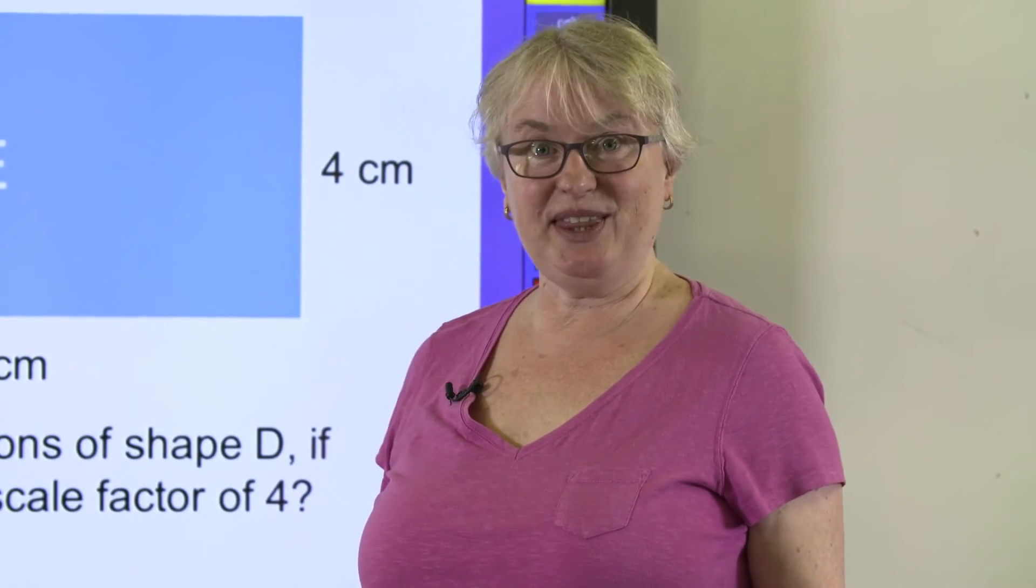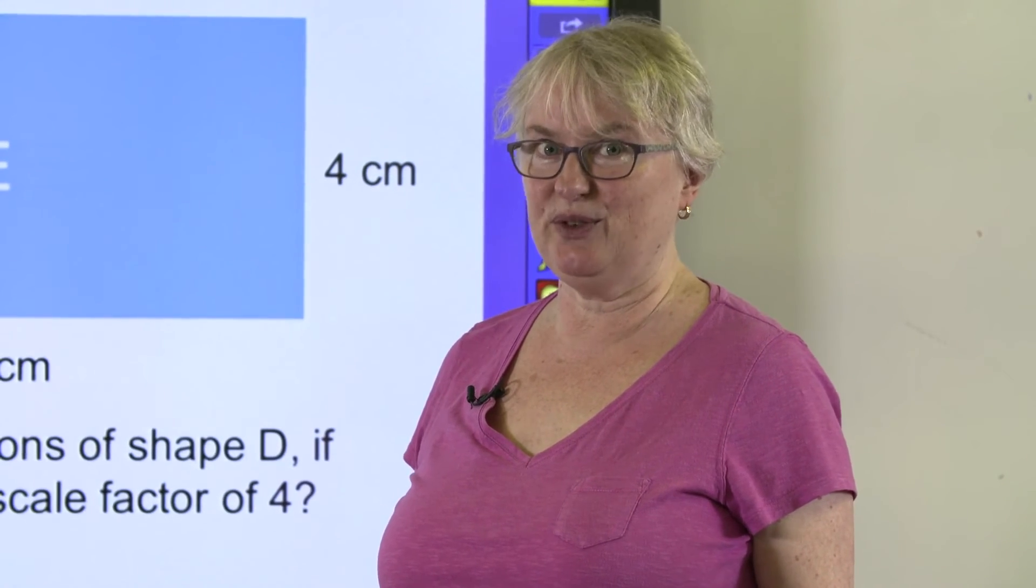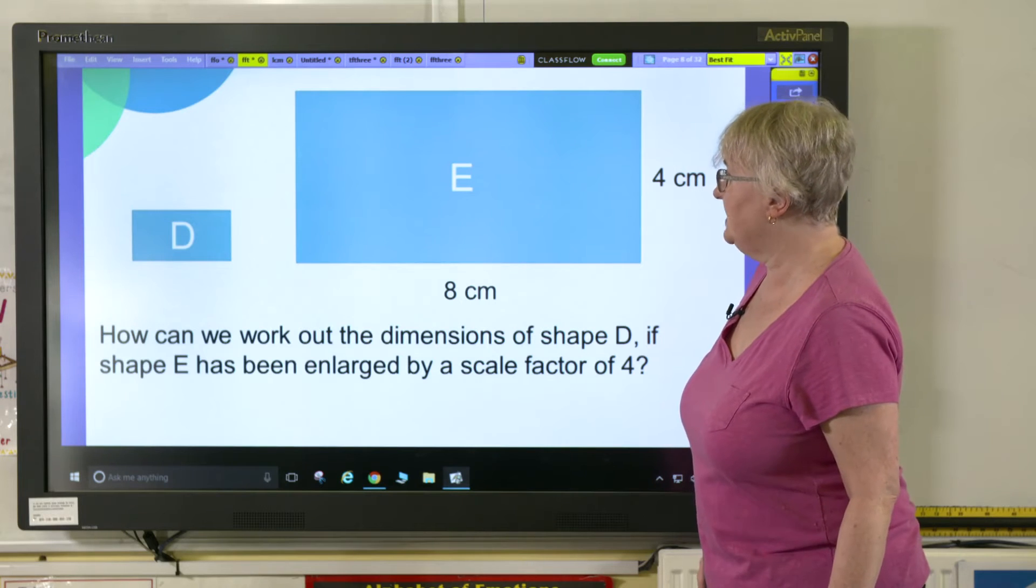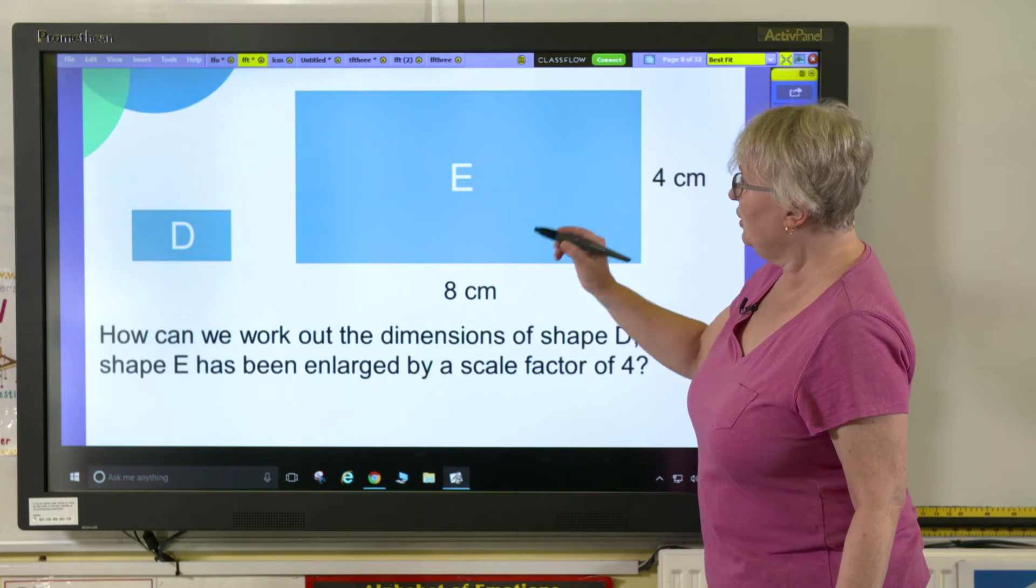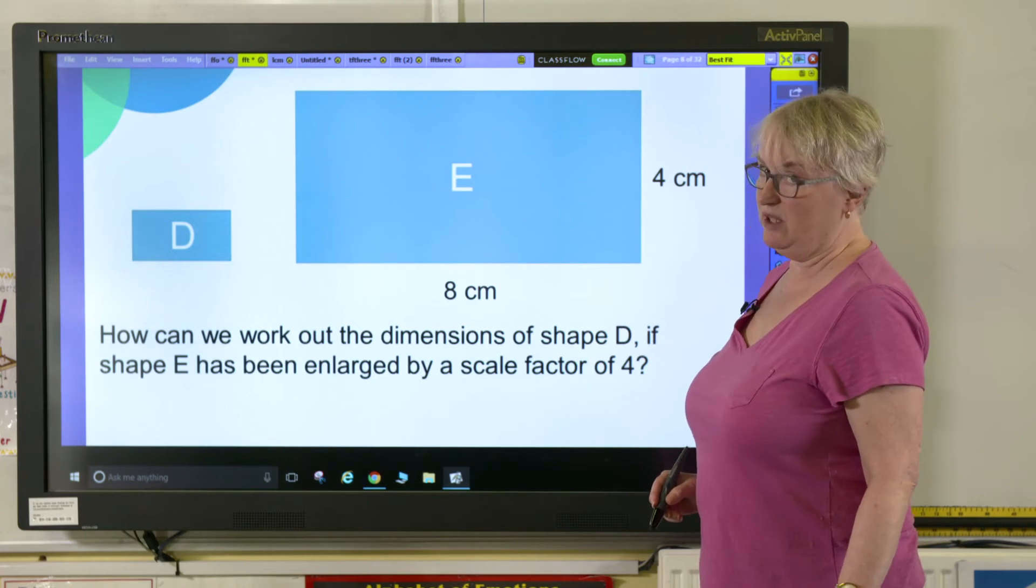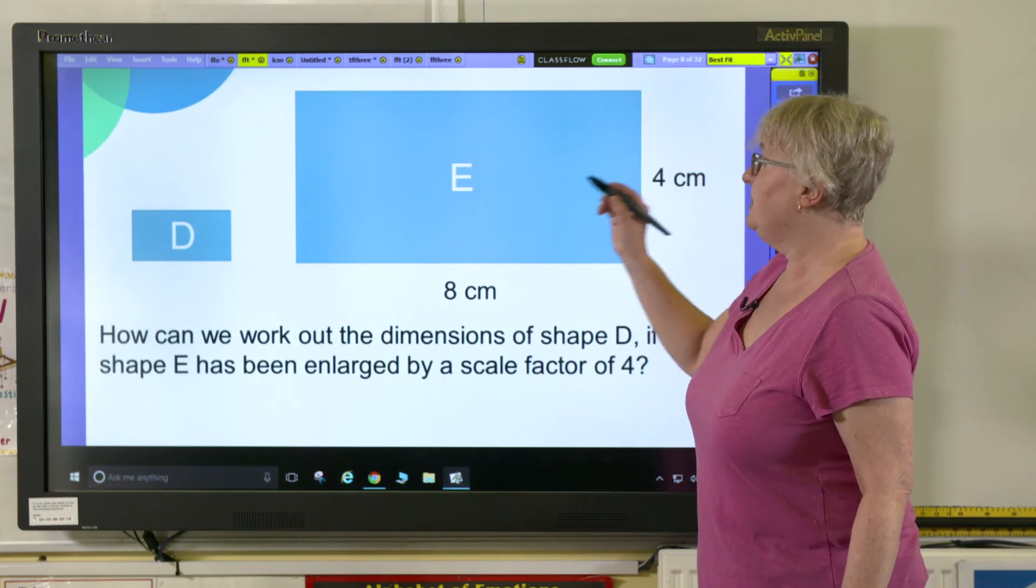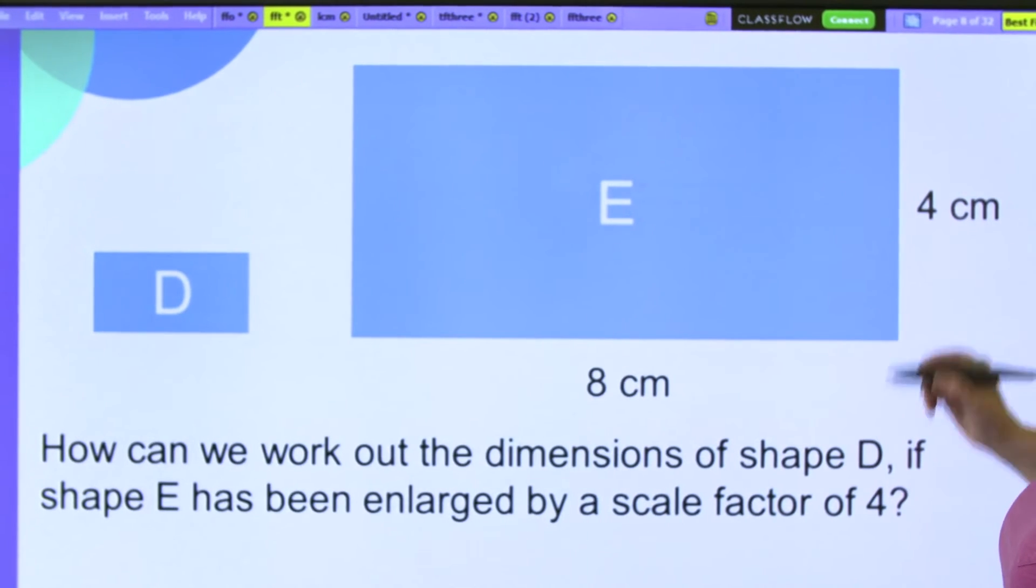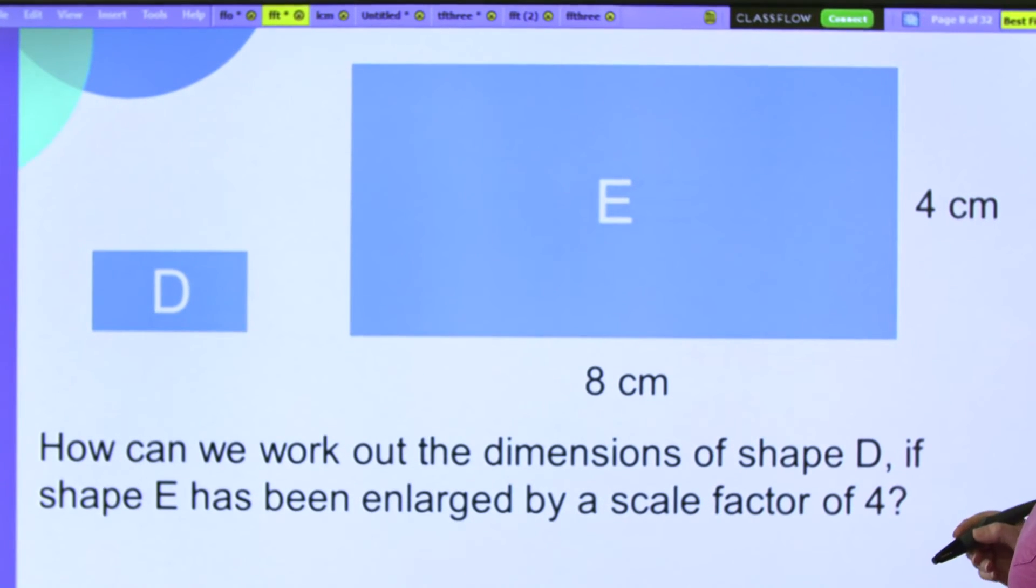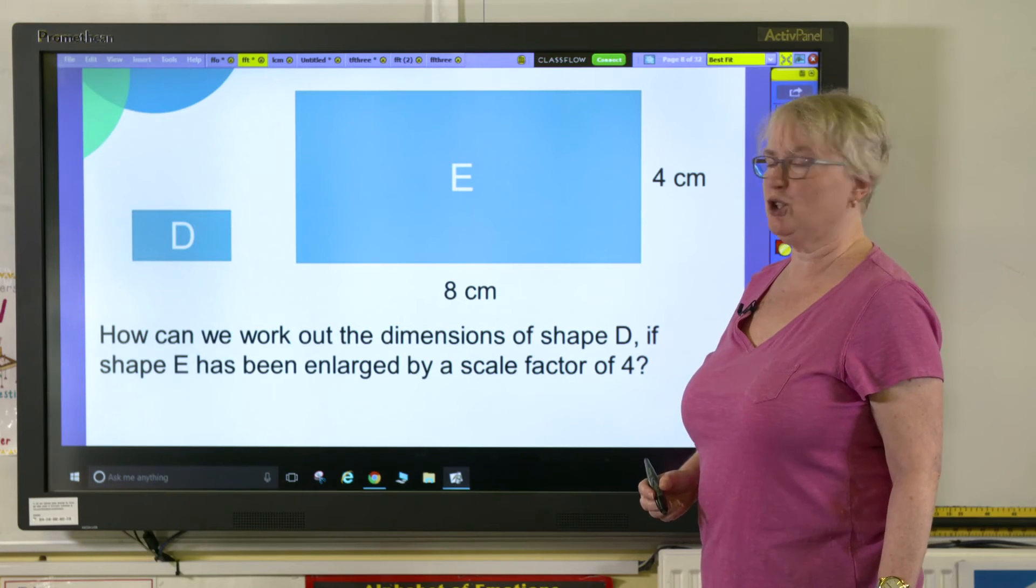Right, let's look at this question. It's quite different. I've got shape D and E. Shape D, if I look at it, I can see it's smaller than shape E. D has been enlarged into shape E and I can see that the rectangular shape E has one length of four centimetres and the longer length is eight centimetres. Let's have a look at the question.